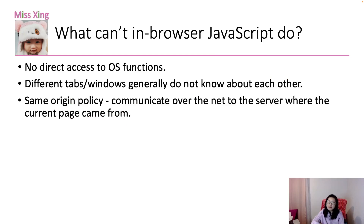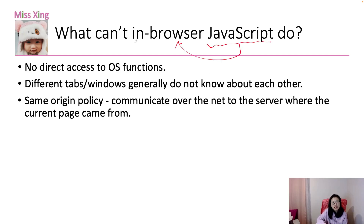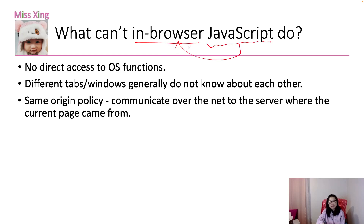There are certain things in-browser JavaScript cannot do. JavaScript code running in the browser cannot access operating system functions like the file system. However, server-side JavaScript can have direct access to OS functions, and the client JavaScript can make an HTTP request to ask the server-side to do something for it.